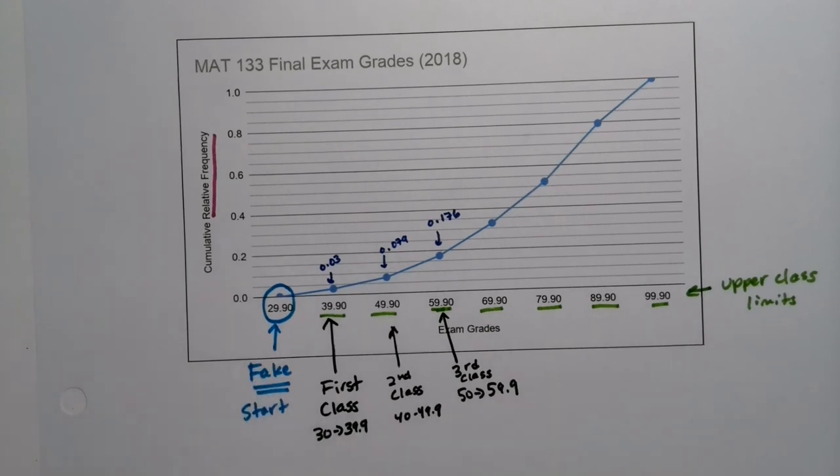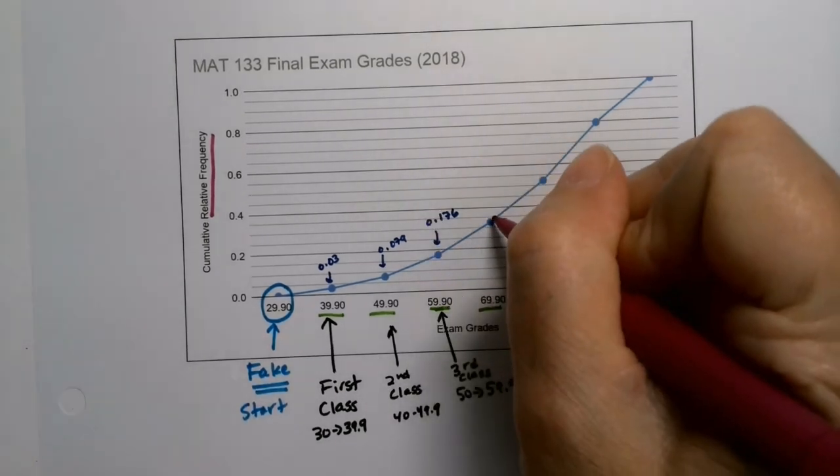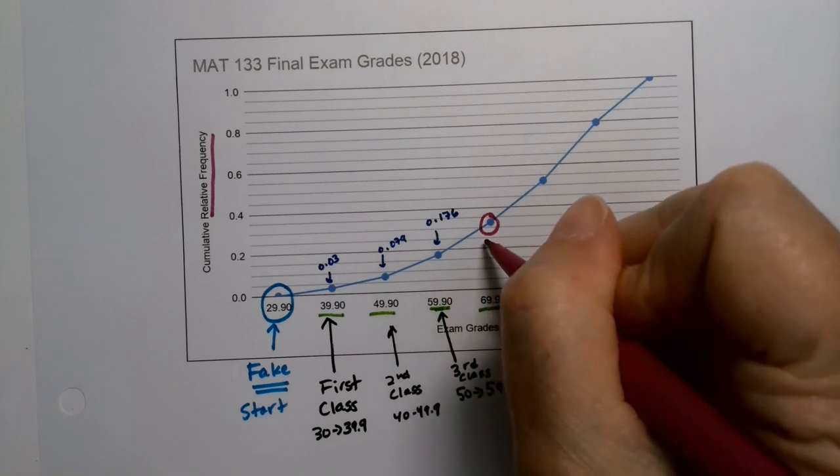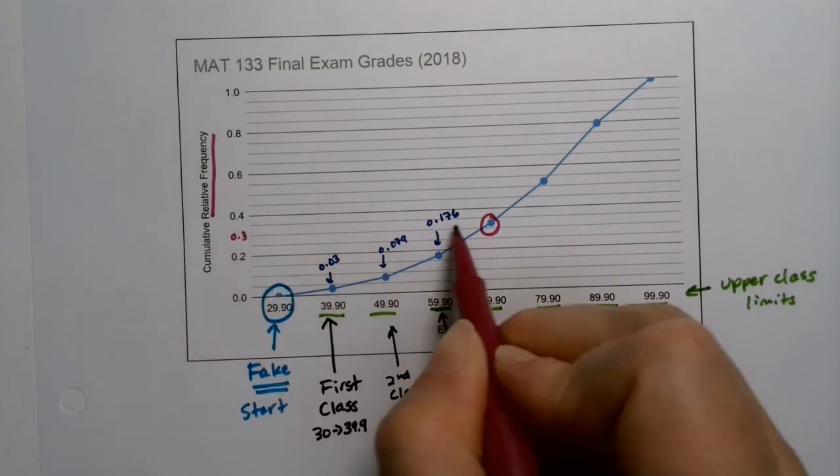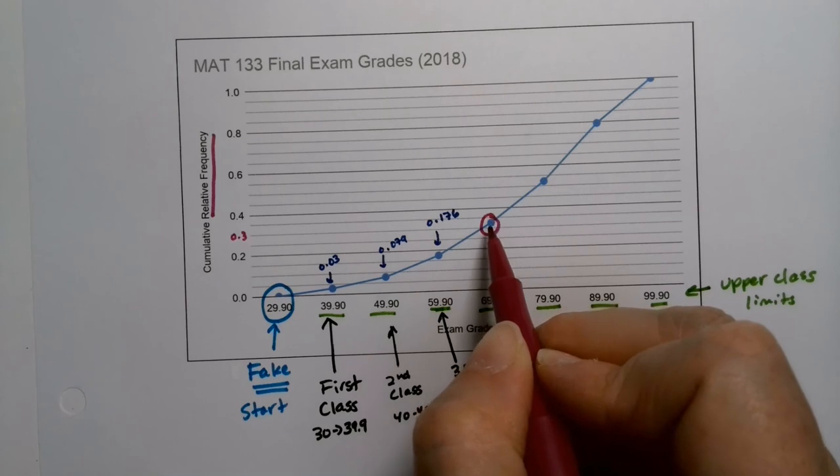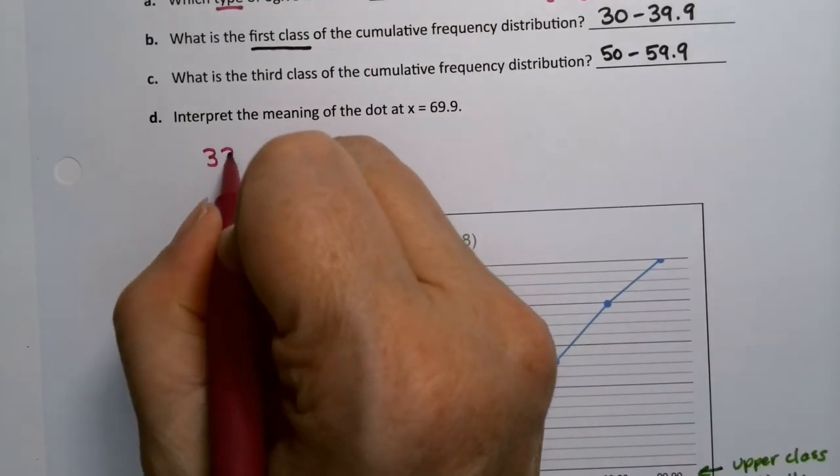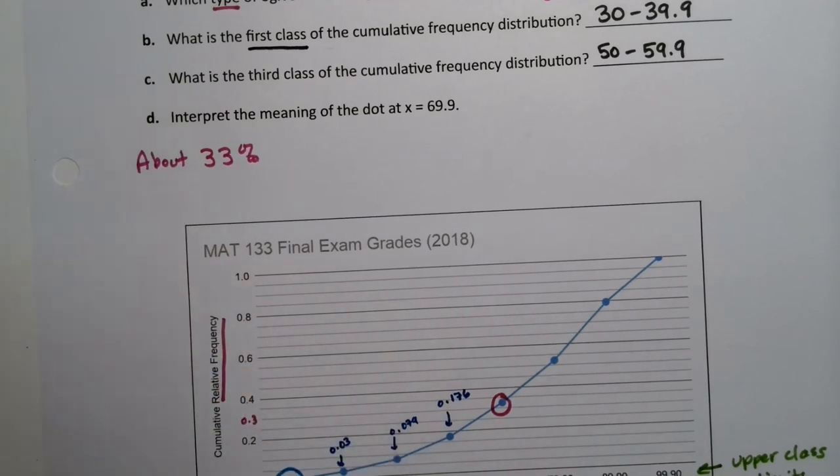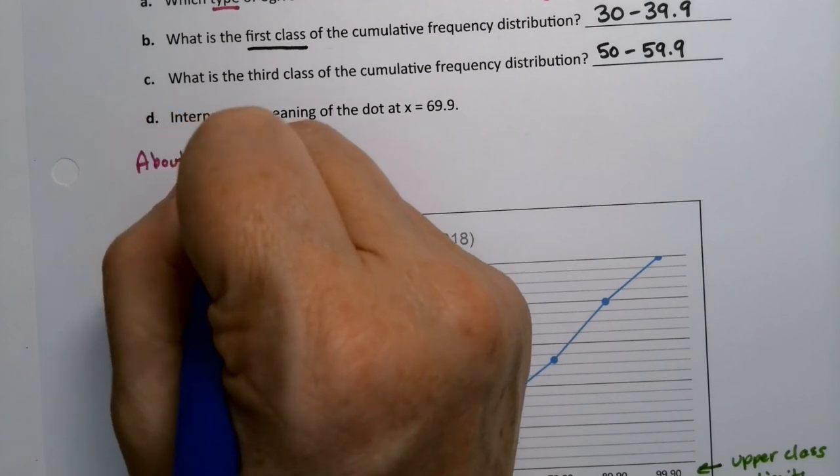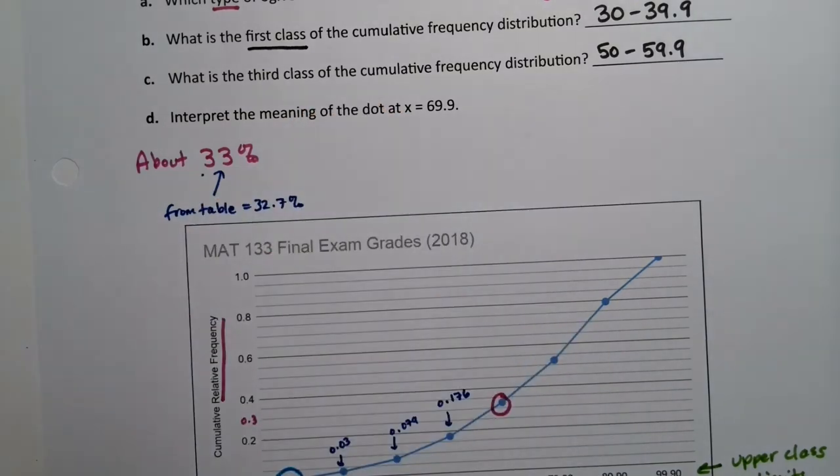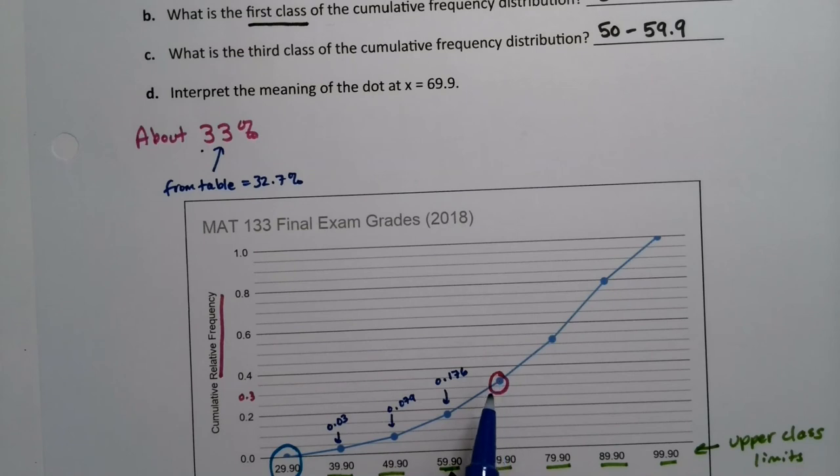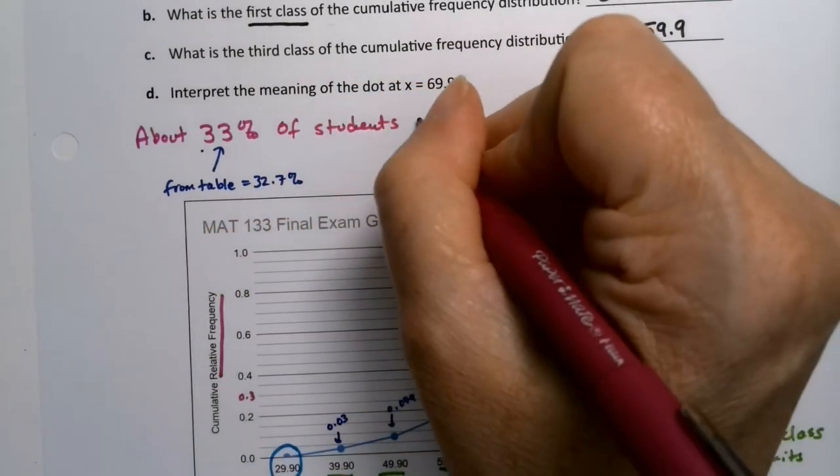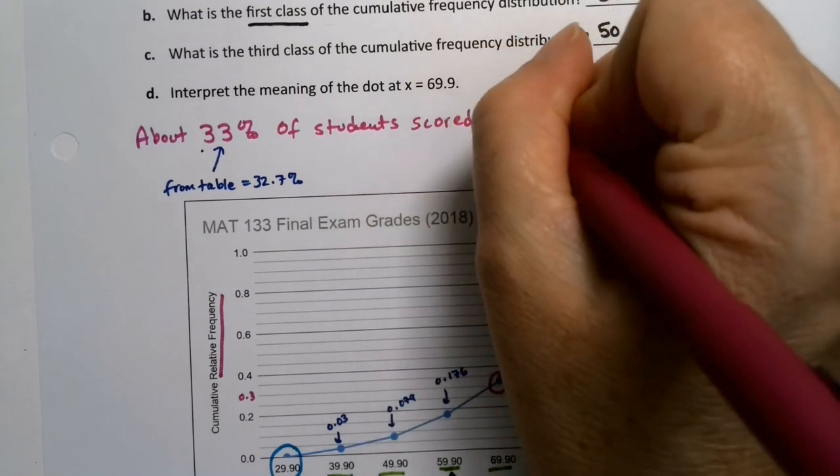All right, now the next part, they want us to interpret the meaning of the dot at x equals 69.9, which is right here. So they want us to interpret the meaning of that dot. Okay, well, it looks like it's at about 0.2, so this is 0.3 right there in the middle, and it's just a little bit above 0.3, right? So maybe like 33.